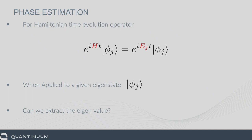The idea of phase estimation is: can we exploit this phase and extract it? Can we implement e^{iHt} and extract the phase? This goes back to what I said about how phase estimation for quantum chemistry uses time evolution as its main primitive. There are lots of papers studying the complexity of phase estimation where you change the method of Hamiltonian simulation. A lot of the Google papers like to use various approaches — I'll speak about LCU and others next session.